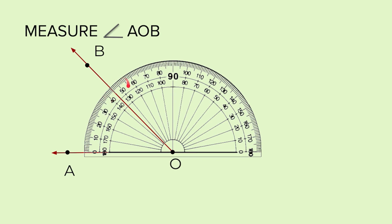We can see here the ray is passing through a point between 40 and 45. So we will count the number of lines. After 40, it is on the fifth line. So that makes it 45. So the angle AOB is 45 degrees.